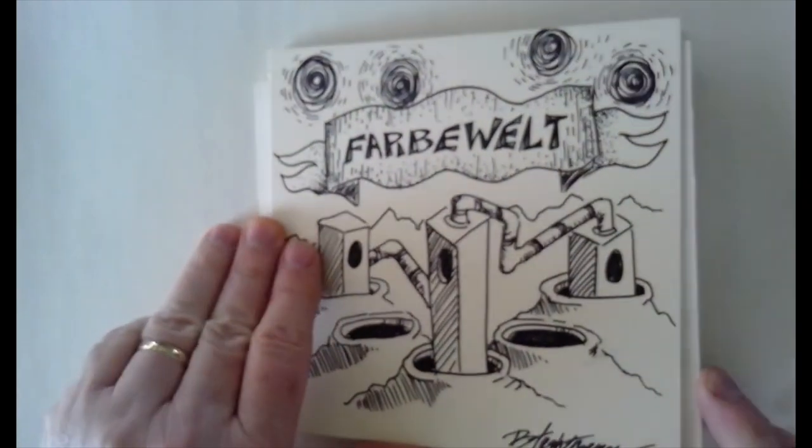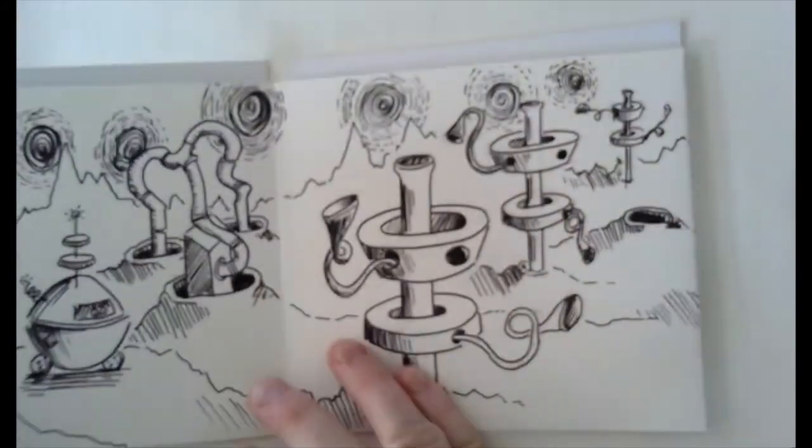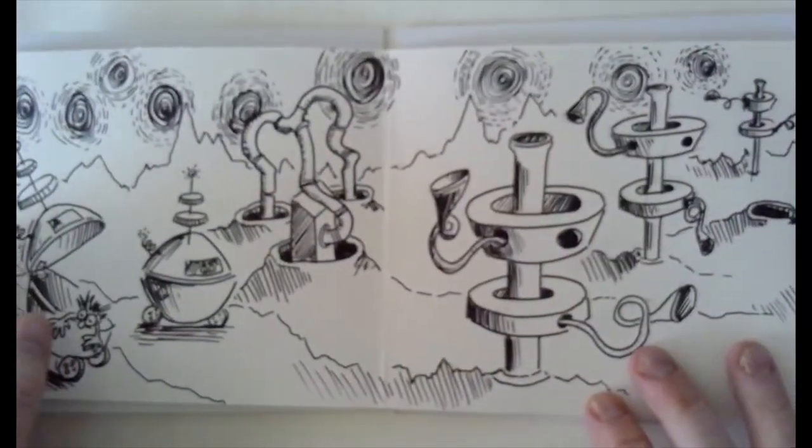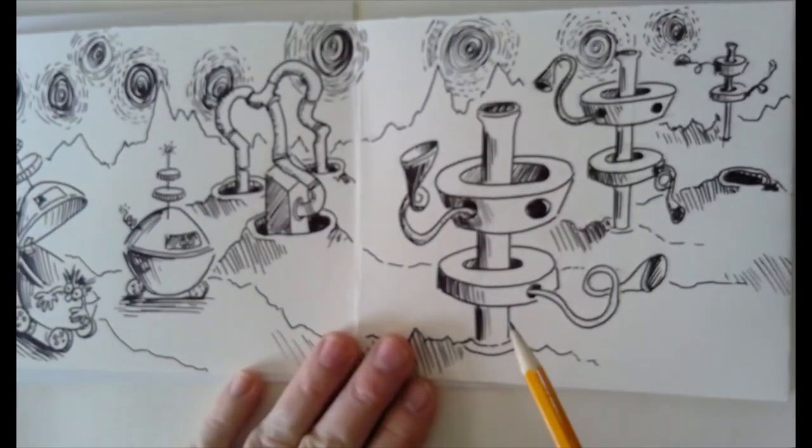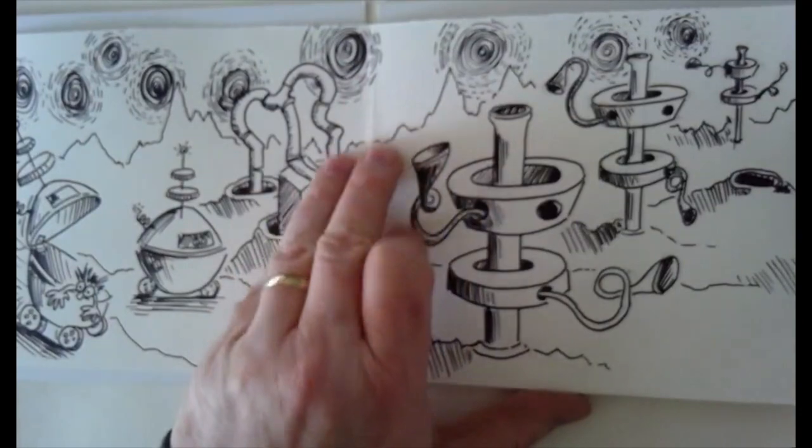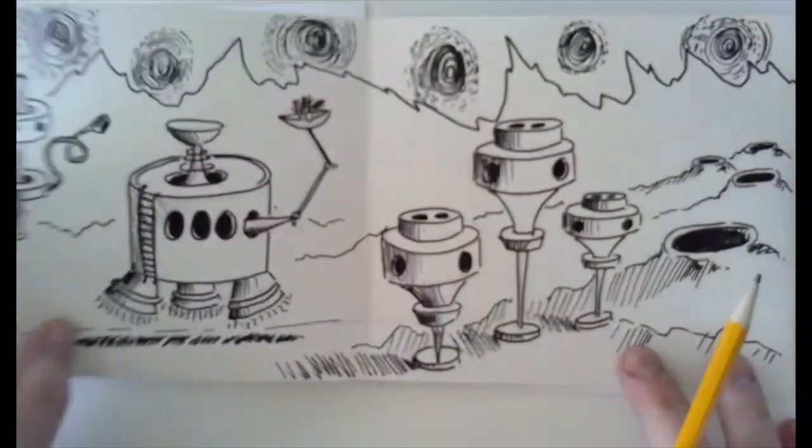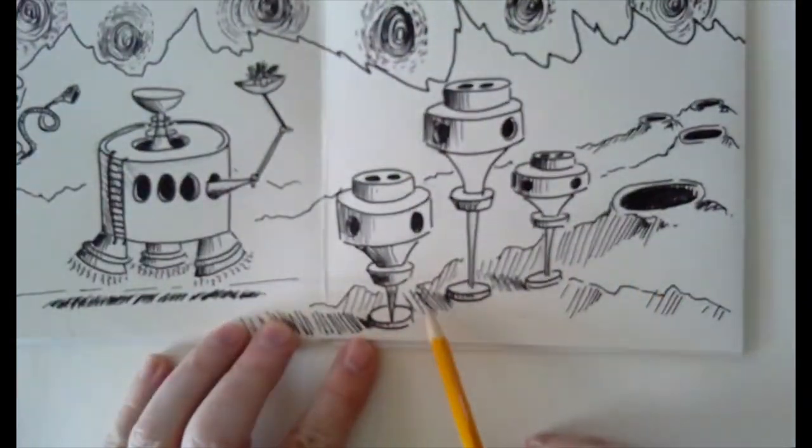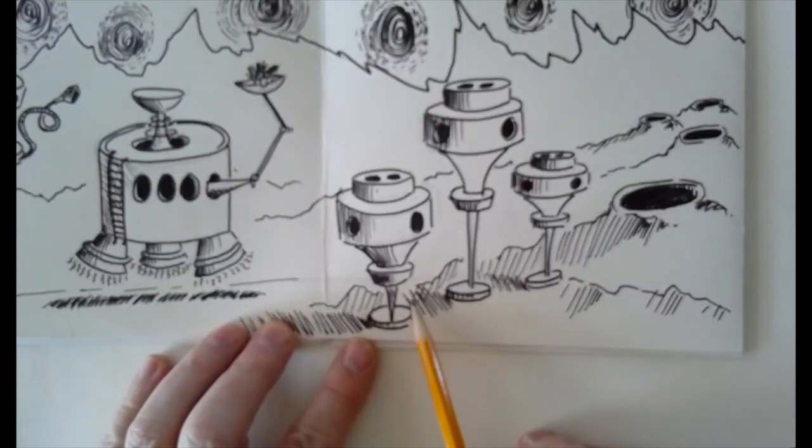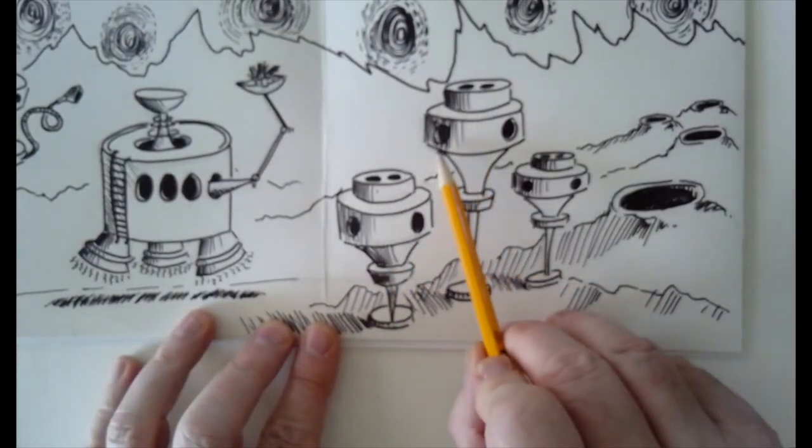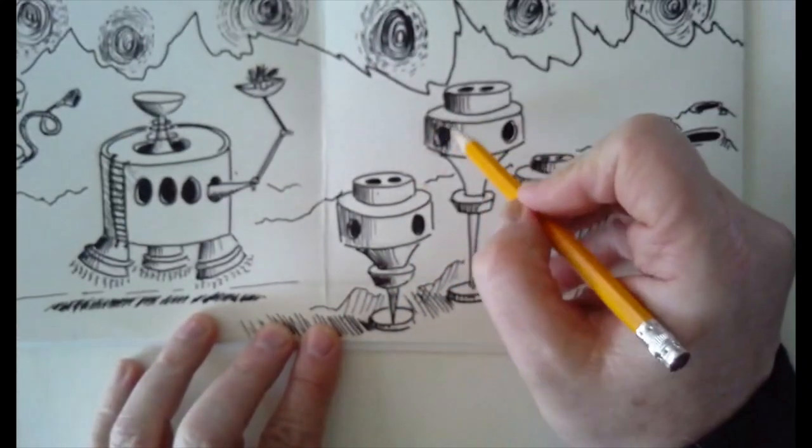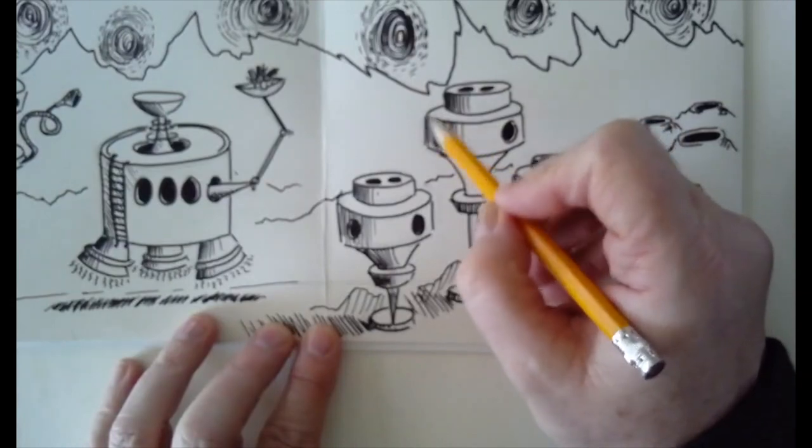you'll notice down here at the bottom. Actually, it's not on this page. It's on the next page, I believe. Yeah, down here at the bottom, I created some areas where the lines cross over. That's called crosshatching. But you'll notice on everything, anywhere that there is a shadow, I would use those lines and those are hatch lines.